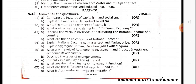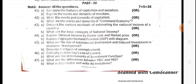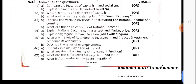Question 43a: discuss the various methods of estimating the national income of a country. Question 43b: what are the basic concepts of national income? Question 44a: explain national income by factor cost and market price. Question 44b: explain the aggregate demand function. Question 45a: what is the role of autonomous investment and induced investment? Book pack.